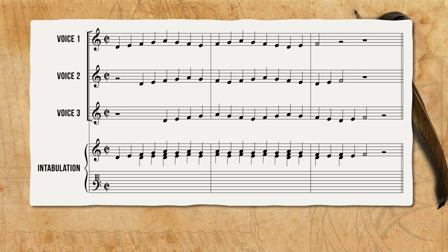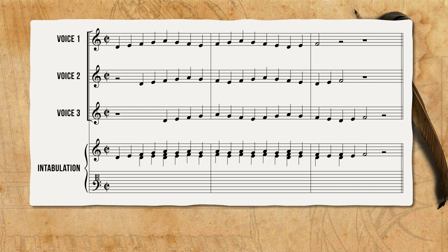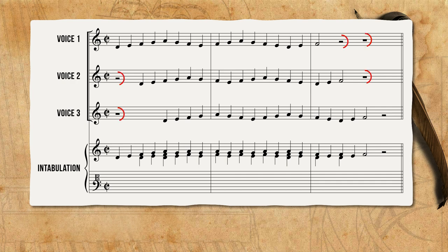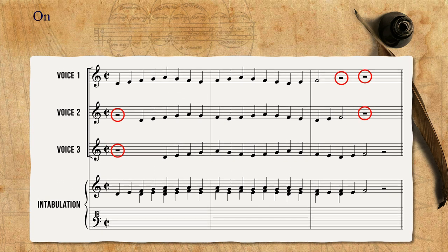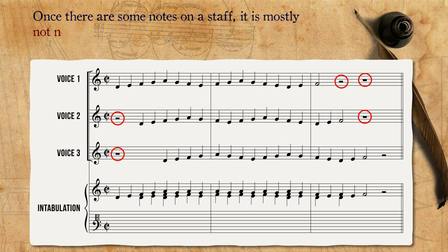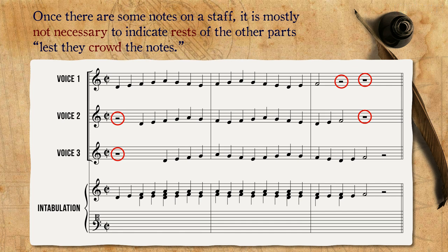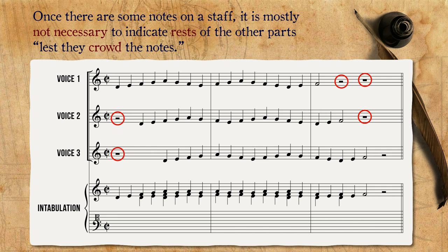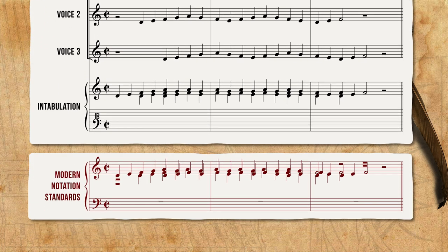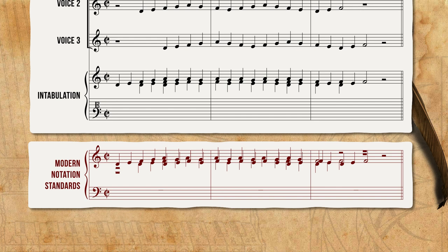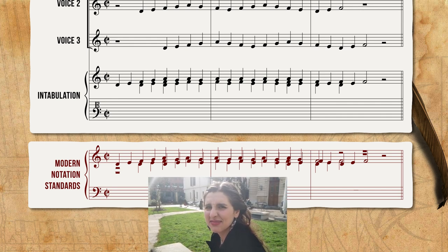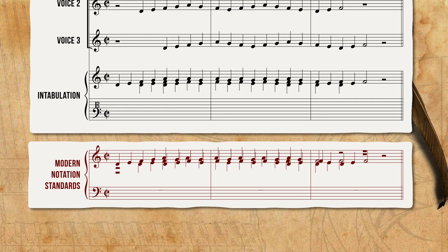For the stem directions, I followed Diruta's principles: whatever note is on top gets the stem upwards, and whatever is on the bottom gets the stem downwards. According to Diruta, I also avoided adding any unnecessary rests. He writes that once there are some notes on a staff, it is mostly not necessary to indicate rests of the other parts, lest they crowd the notes. There is a sense of clearness and cleanness in Diruta's principles — the inclusion of only the relevant information for the execution of the music. Compare this to modern notation standards: preserving a specific stem direction for each voice and including all rests, the outcome is not necessarily better or clearer, and the score is just a bit more messy.